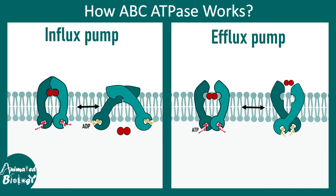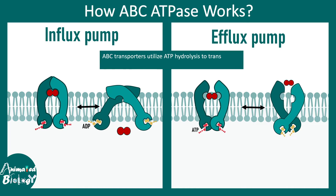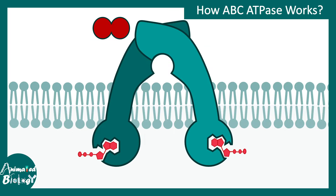ATP hydrolysis literally fuels the pump. There could be influx pumps which bring molecules inside the cell towards the cytoplasm, and there could be efflux pumps which pump molecules out from the cytoplasm to outside the cell. Both of these are possible, but one thing to remember is that ABC transporters utilize ATP hydrolysis to fuel transport against the concentration gradient. In a moment we'll understand why they are so relevant in the context of cell biology, cancer, and multi-drug resistance.